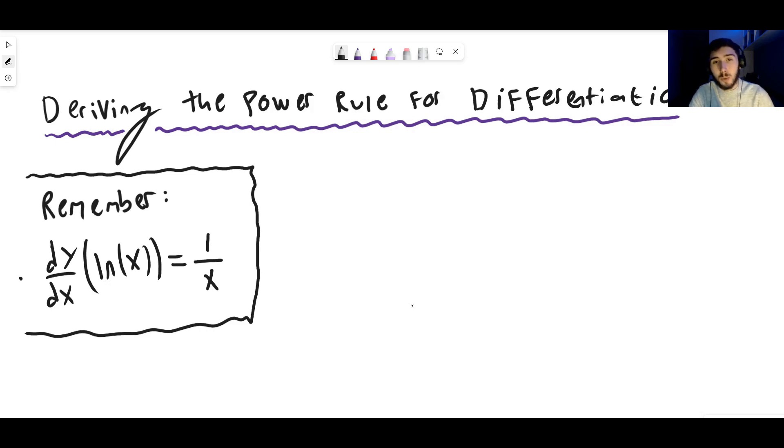We need to know where that comes from. I have already got a video on why that is true, you might want to check it out. So we're going to use the fact that the derivative of natural log of x is 1 over x as a fact in this video.